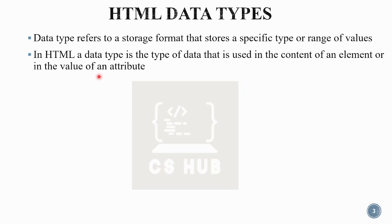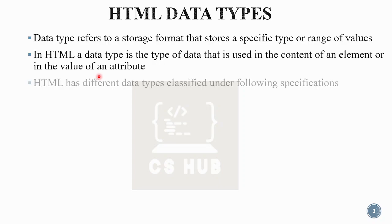The element is a content type, or the value as a value of an attribute, using HTML data type. Generally, HTML has different types of data types, and they are again classified into different categories.